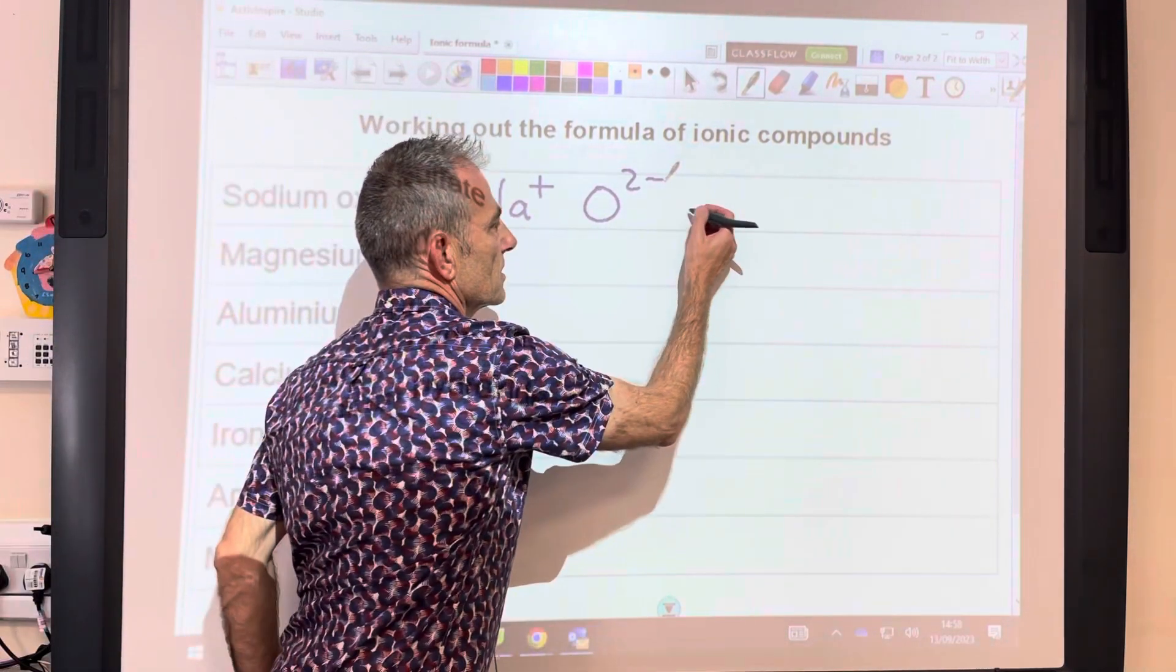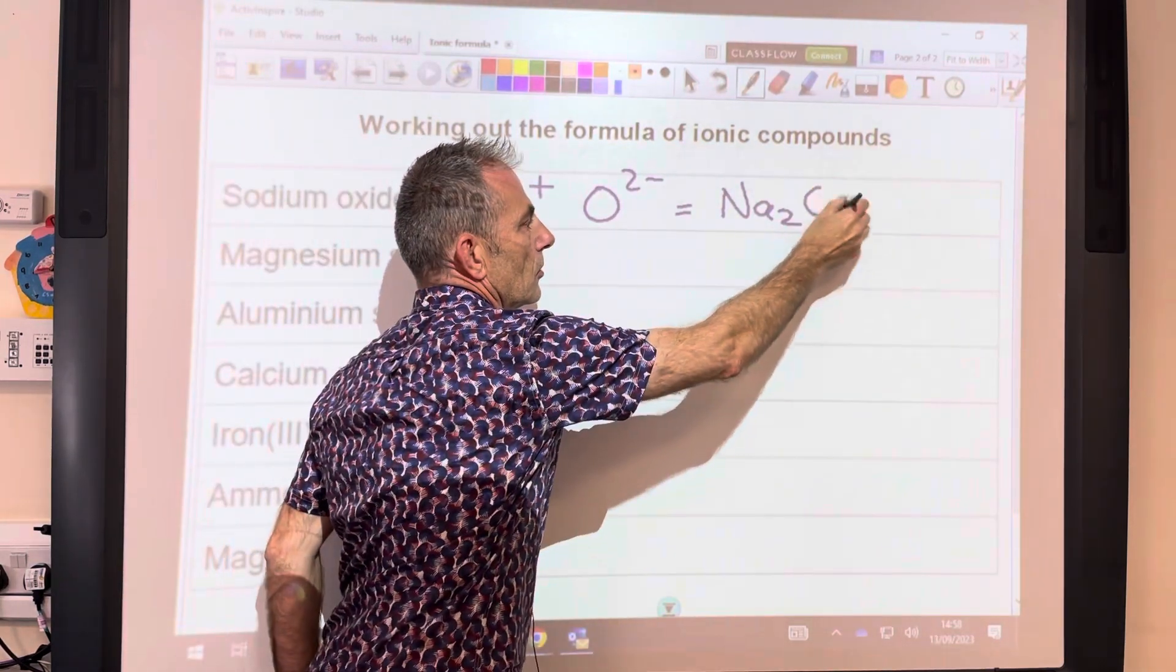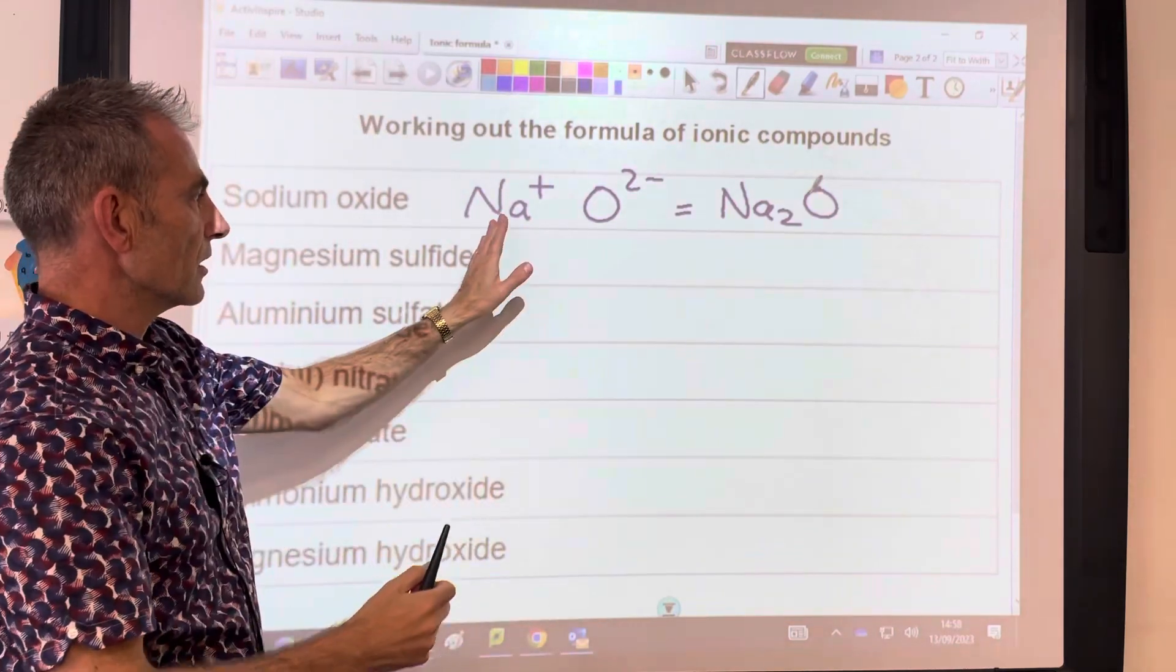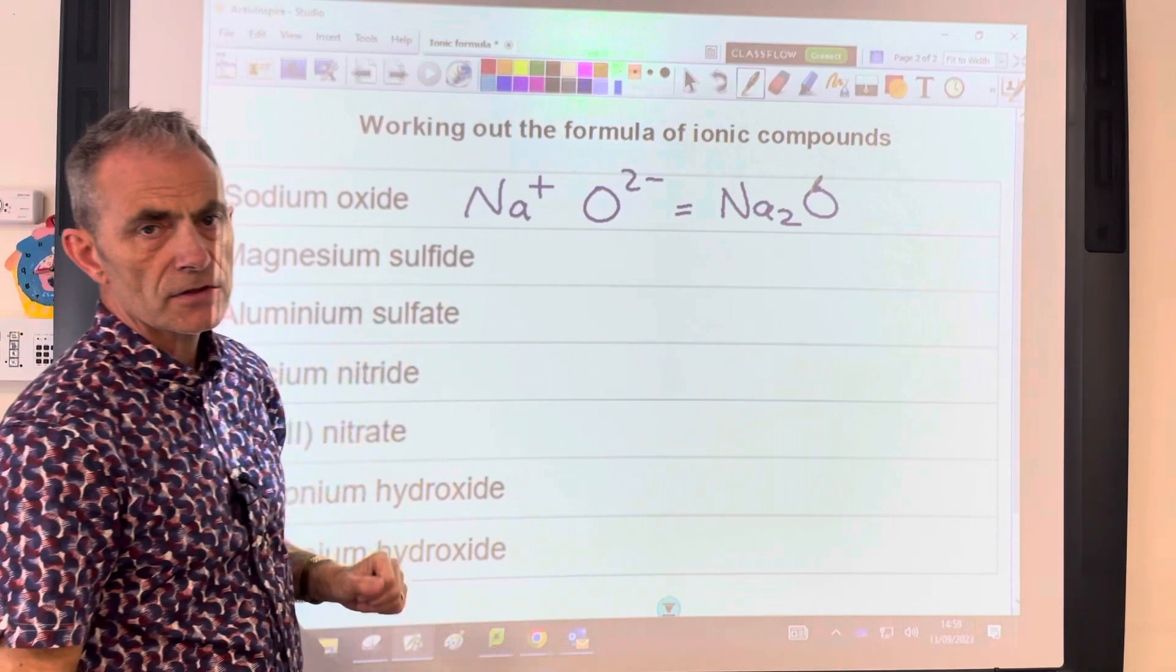So how do we express that in the formula? We write Na2, little 2 there, and then 1O. That would work because you'd have 2 plus and 2 minus. So that's the formula for sodium oxide.